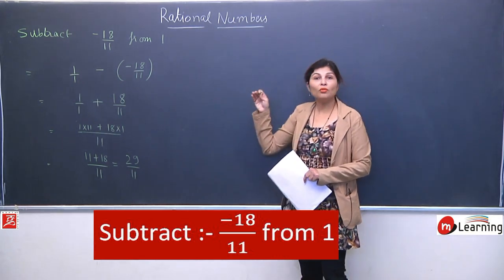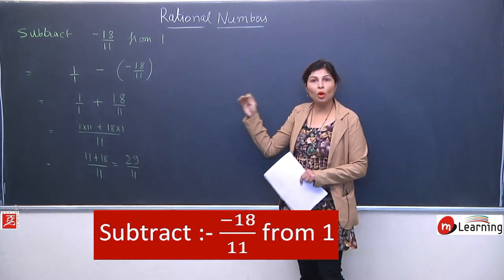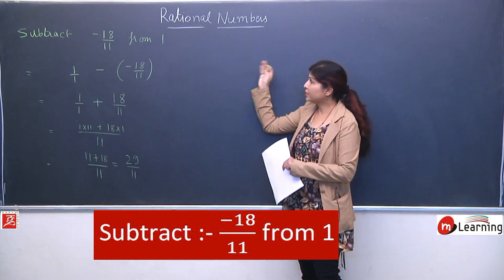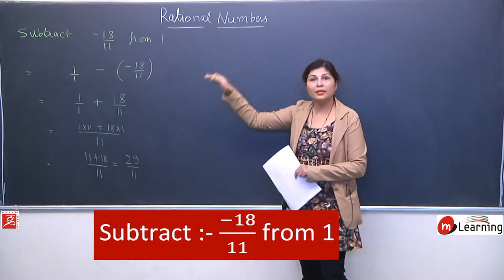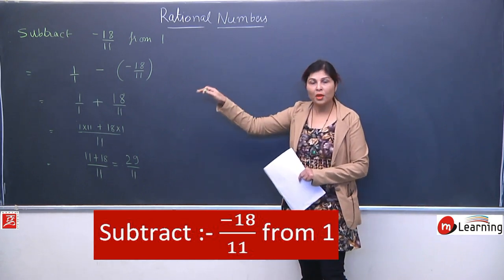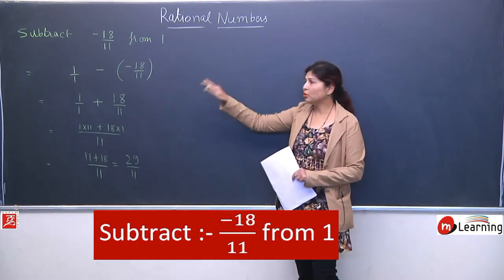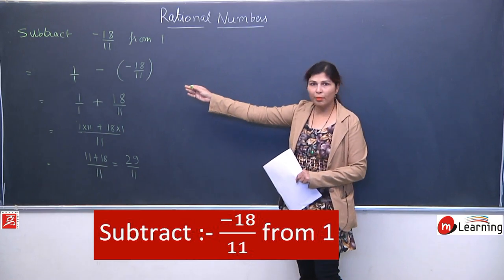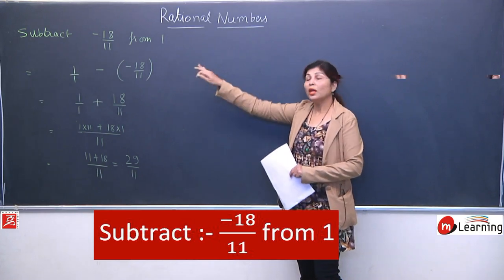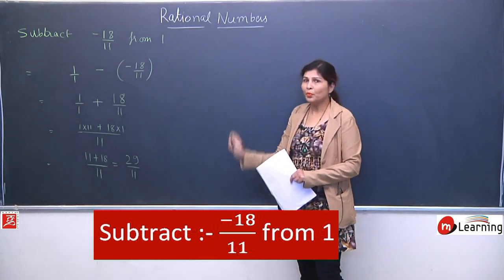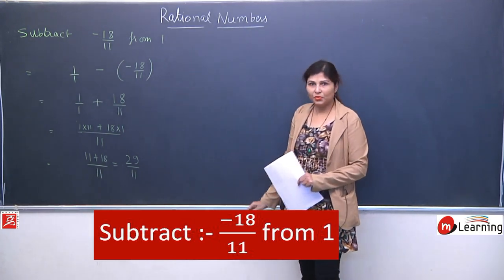The key point here is to know the meaning of 'from'. Whenever 'from' appears, we write the 2nd term as the 1st term, and the subtract operation gives a minus sign. Then the 1st term shifts to become the 2nd term.